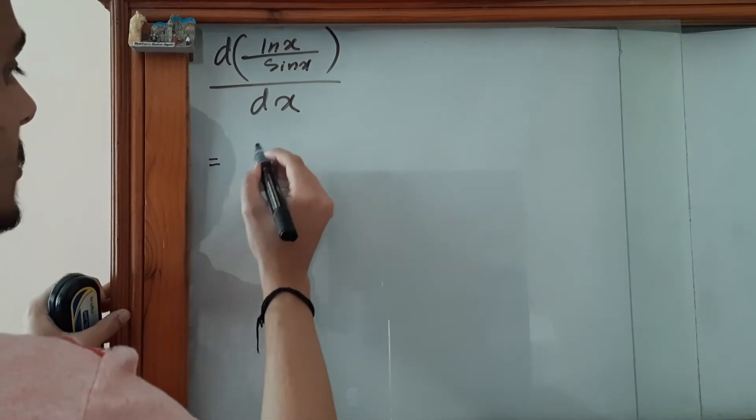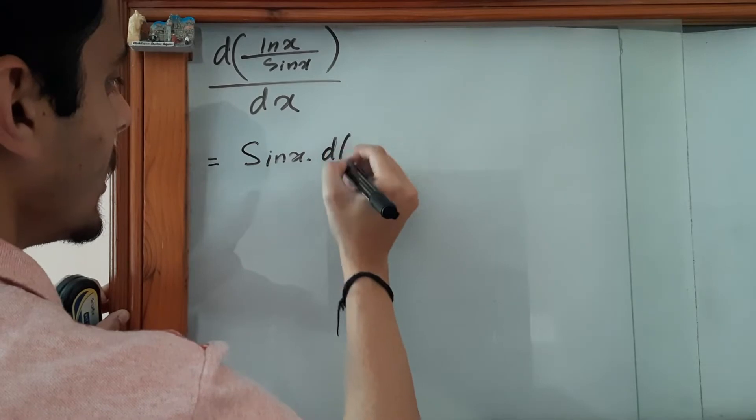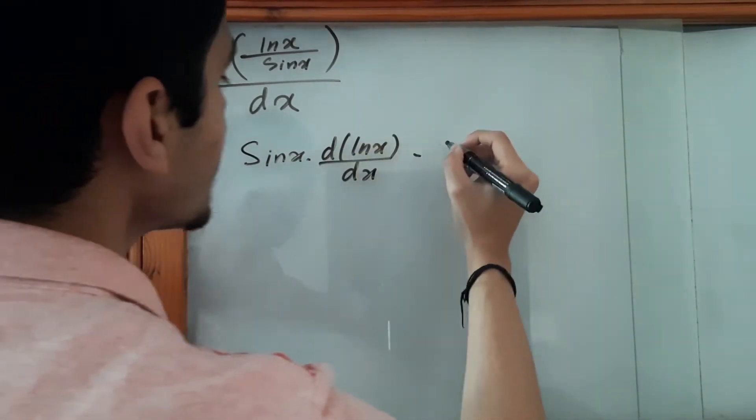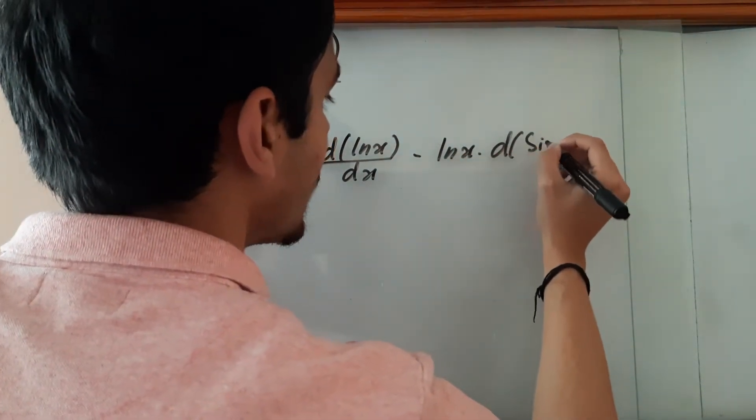So it equals sin(x) times d(ln(x))/dx minus ln(x) times d(sin(x))/dx. I hope you are familiar with this rule.